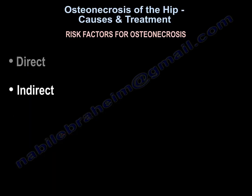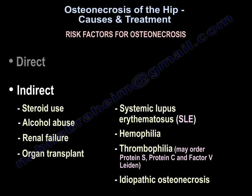Indirect risk factors for avascular necrosis of the hip include steroid use, alcohol abuse, renal failure, organ transplant, systemic lupus erythematosus, hemophilia, and thrombophilia. You may order protein S, protein C, and factor V Leiden for the patient, as well as idiopathic avascular necrosis.